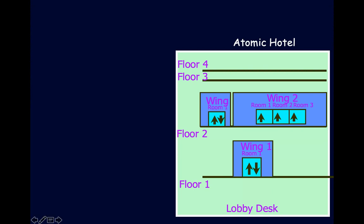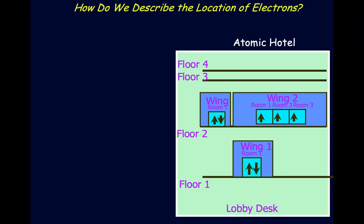This becomes the model of how we're going to deal with this, because the question becomes: where is the electron? We really want to be able to pinpoint where it is and match the data we see. I like to think of it as a hotel. So let's say you're checking into a hotel — you walk into the lobby. The lobby is going to be our nucleus — the positive nucleus down at the lobby desk.